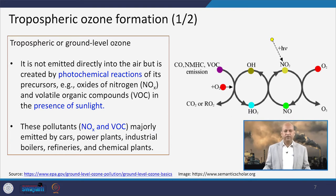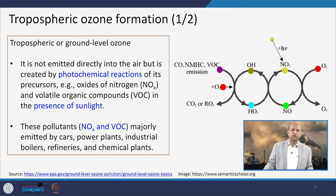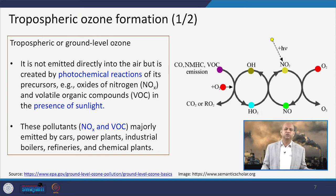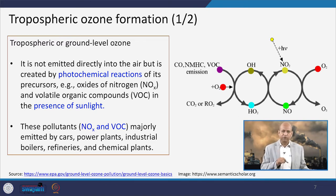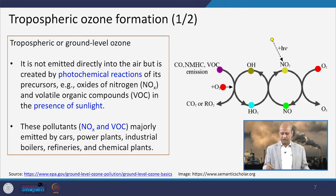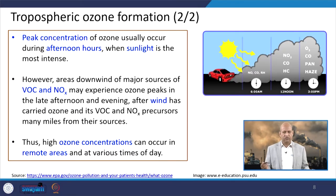Tropospheric ozone formation is a little different because it needs precursors — chemical compounds or air pollutants which, in the presence of sunlight through photochemical reactions, produce ozone. That is why we call them precursors: carbon monoxide, VOCs (volatile organic compounds), non-methane hydrocarbons, and similar pollutants. In the presence of OH radicals, HO2, and ultraviolet sunlight, photochemical reactions drive ozone production in the troposphere.